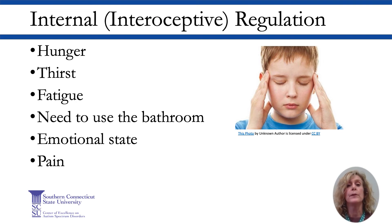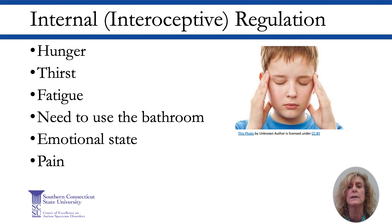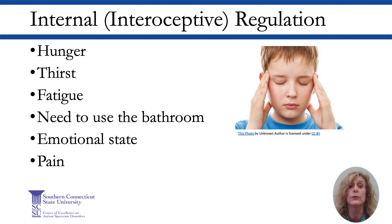Students may demonstrate sensory processing challenges in one or a combination of the aforementioned sensory systems that affect their participation within the academic setting. Interoception, or the sense of the internal state of the body, is another factor that should be considered. Hunger, thirst, fatigue, needing to use the bathroom, and emotional state are other factors that can impact sensory regulation. By identifying the implicated sensory systems, we can then match the appropriate sensory input to the student according to their unique sensory profile.